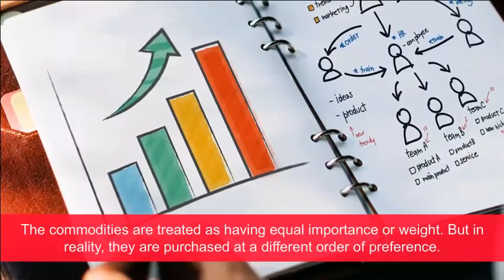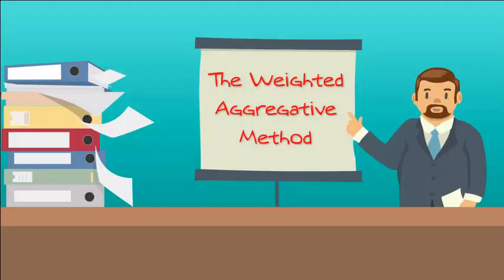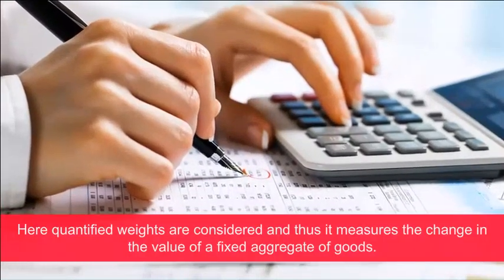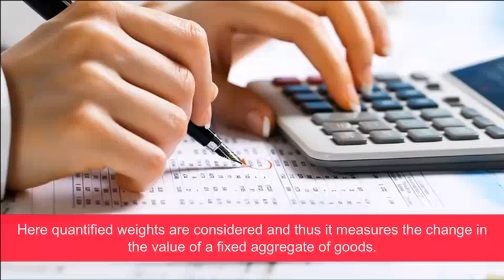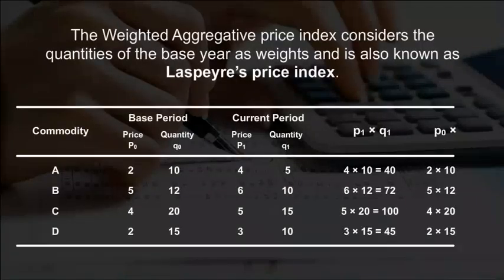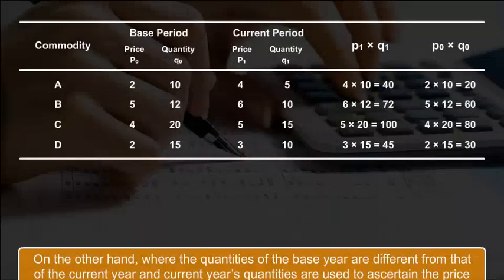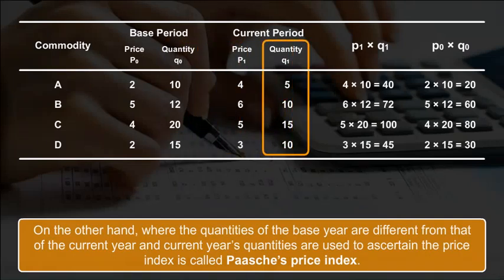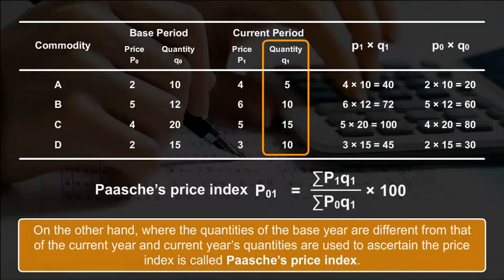The commodities are treated as having equal importance, but in reality they are purchased at a different order of preference. The weighted aggregative method: a simple index number becomes a weighted index number when the relative significance of each item is taken into consideration. Quantified weights are considered, measuring the change in value of a fixed aggregate of goods. The weighted aggregative price index using base year quantities as weights is known as Laspeyres' price index, while using current year quantities is called Paasche's price index.